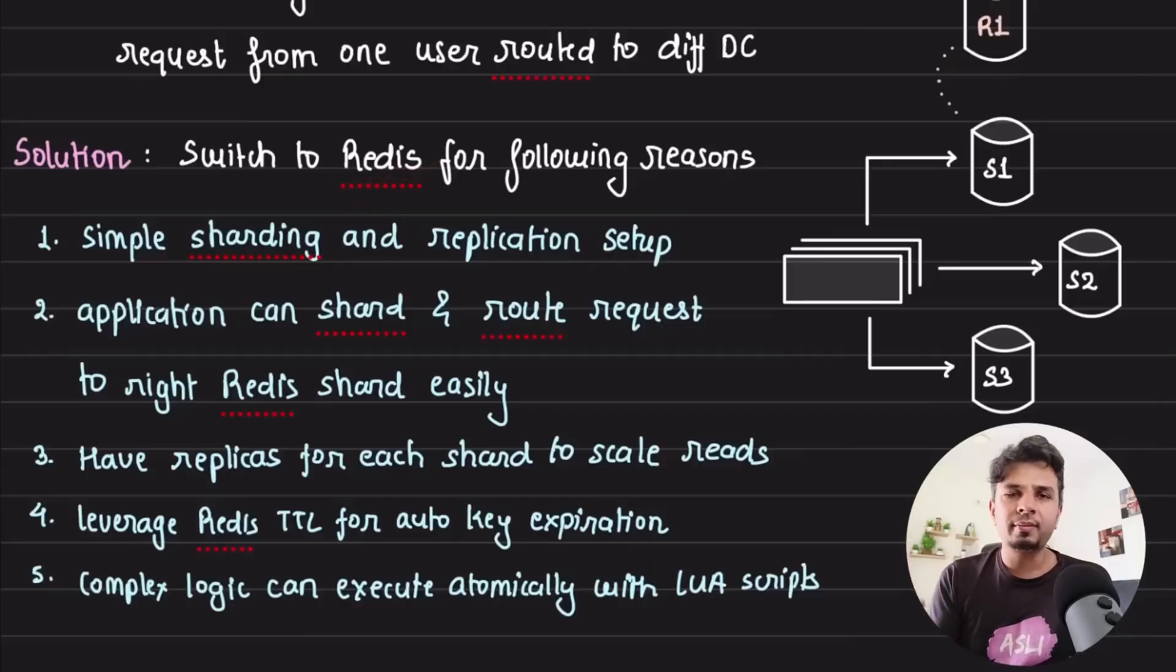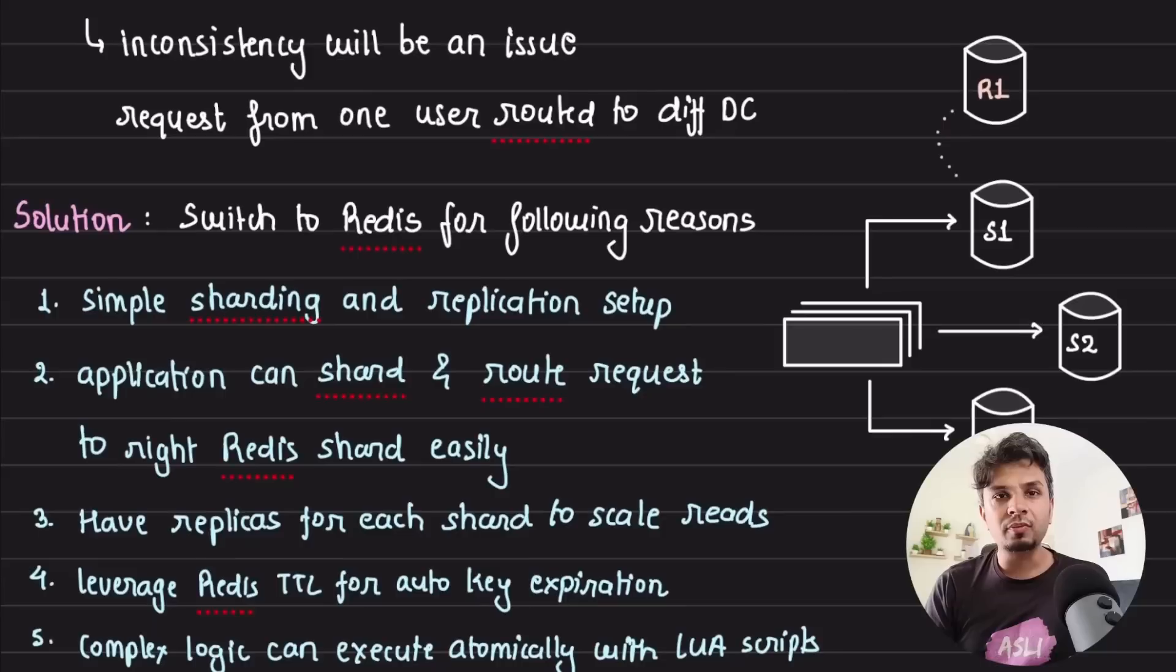Obviously, like everybody knows, the most common implementation of rate limiter is by using Redis, so they hopped along the bandwagon and switched to Redis for the following reasons. Reason number one is they wanted a simple sharding and replication setup. To be honest, Redis has one of the easiest ways to shard the data and create replicas out of it. It's pretty easy to set up. Second is their application can shard and route the request to the right Redis node.